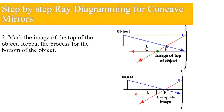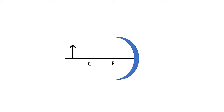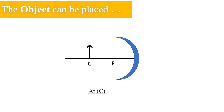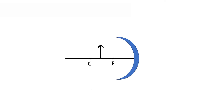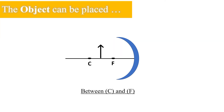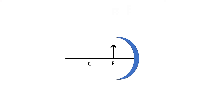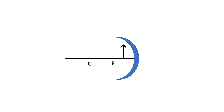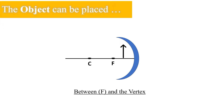Objects can be placed at different positions in front of a concave mirror. The object can be placed beyond C, at C or the center of curvature, between the center of curvature and the focal point, at the focal point, or between the focal point and the vertex.